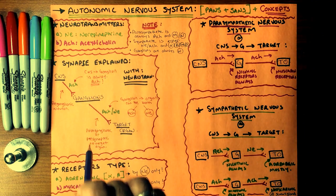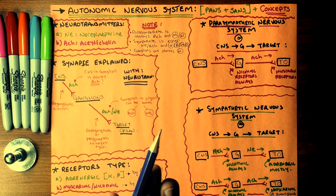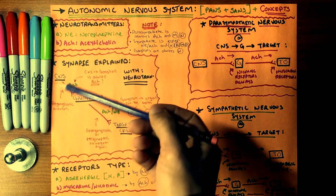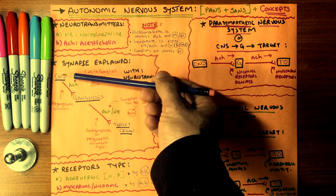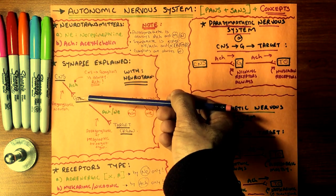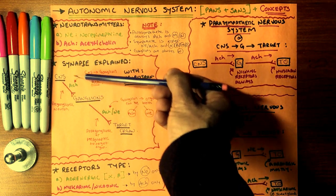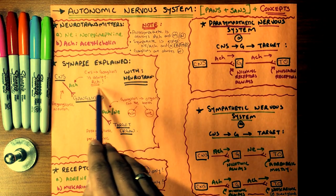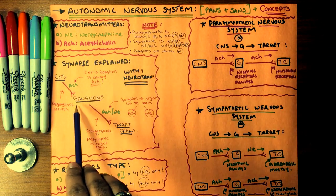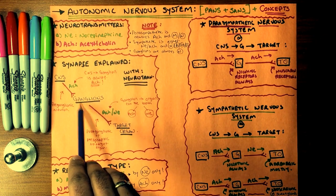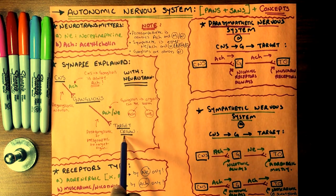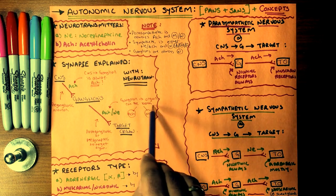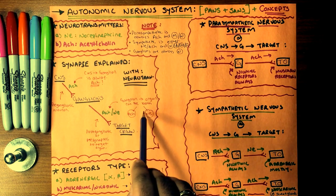Regarding the correlation between receptors and neurotransmitters in a synapse: every neurotransmitter from the central nervous system to the ganglions will always be acetylcholine — it is always acetylcholine. Any neuron from the ganglion to the target organs could either be acetylcholine or norepinephrine, depending on the system and the action intended.